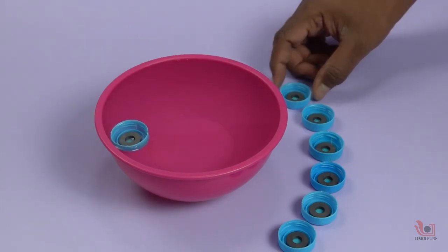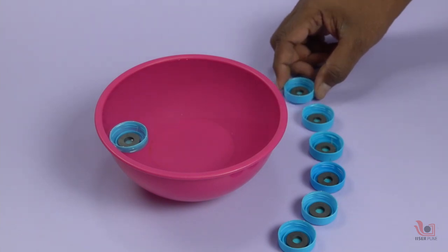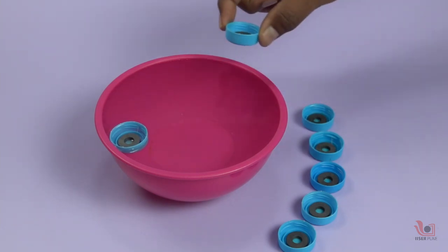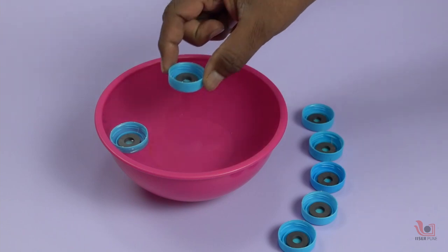Why do the magnets and bottle cap float on the surface of the water? Because its average density is lower than the density of the water.